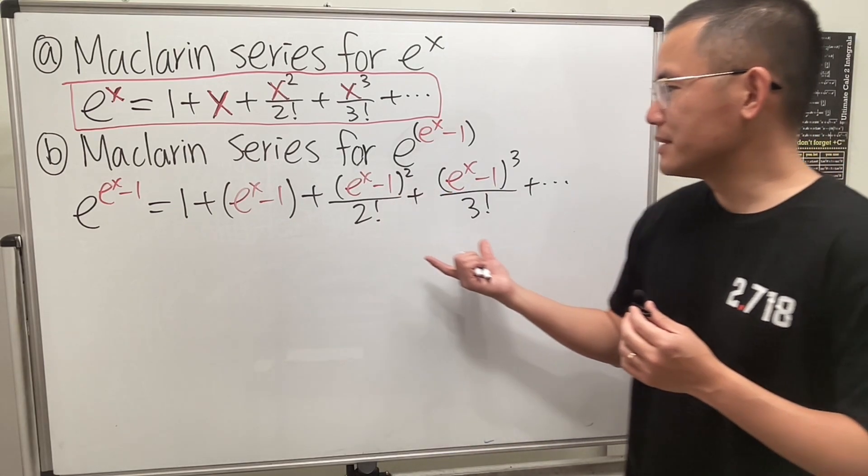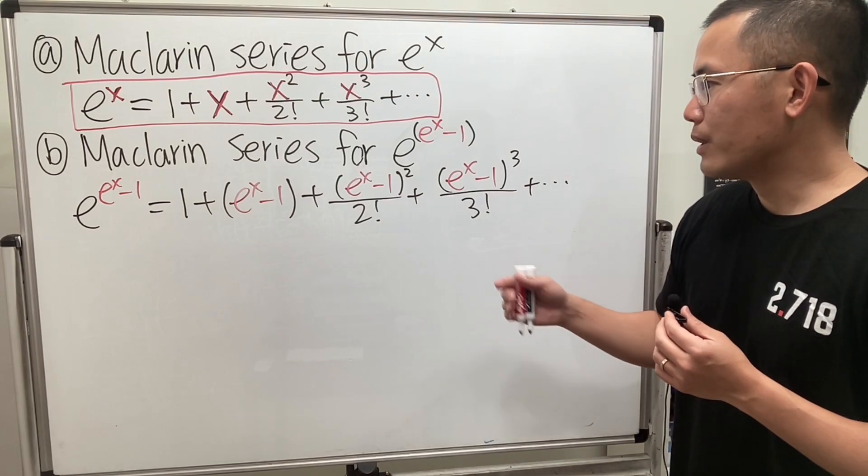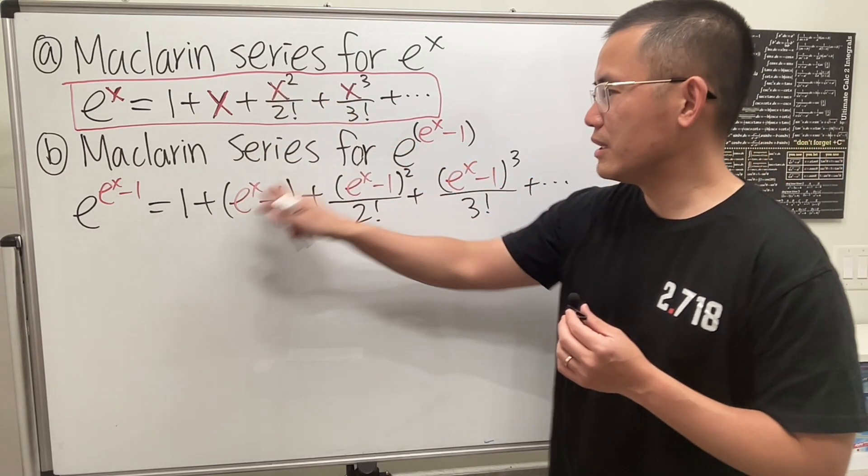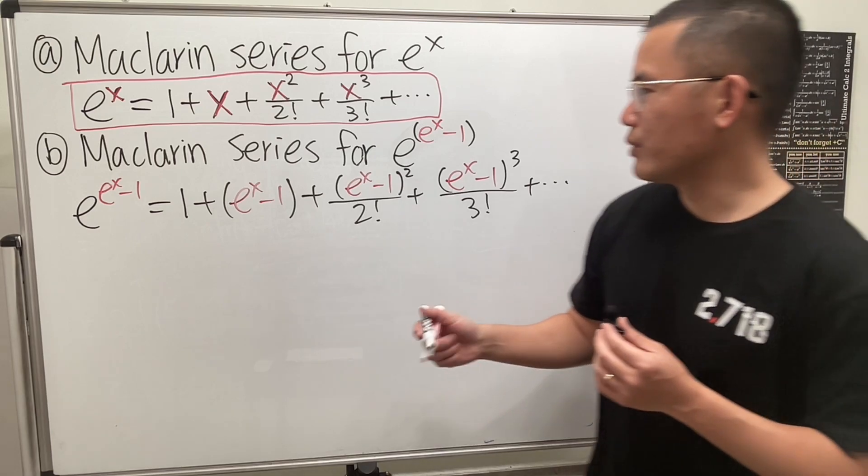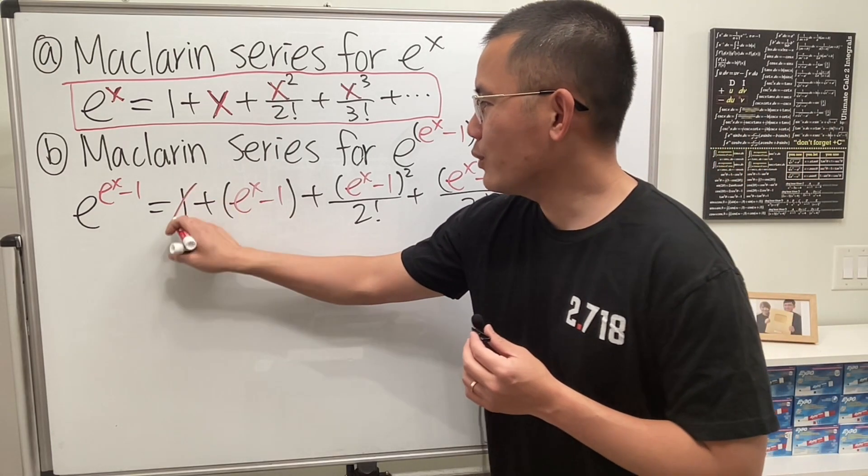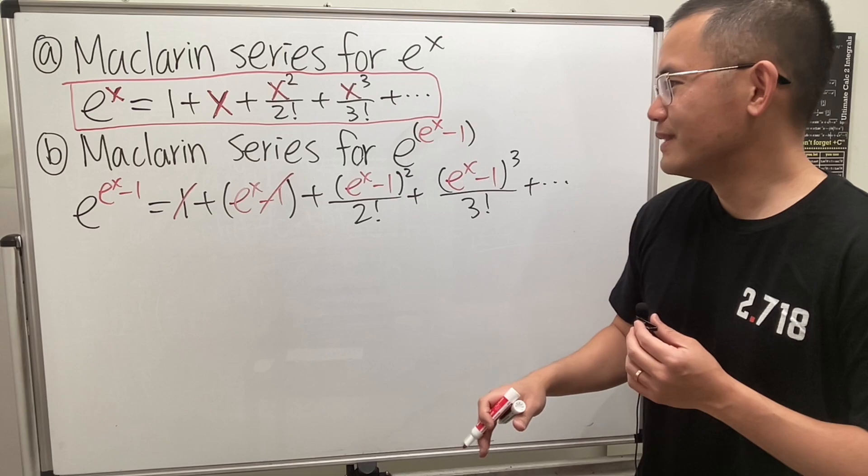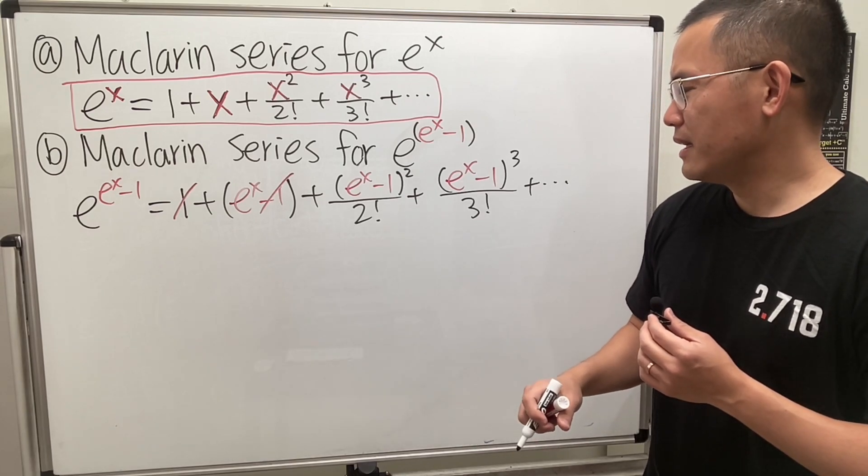Either you collect like terms now and then combine, or just plug this in here for e to the x. I don't really know if there's a good way to do any of this. Anyways, I know one minus one is zero, so that's gone. That's nice.